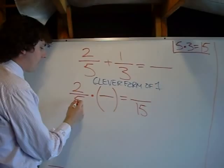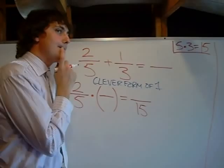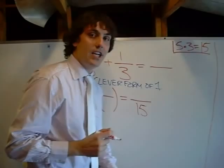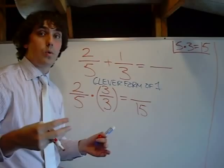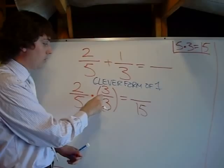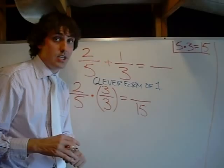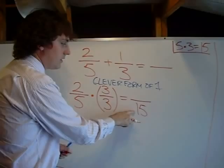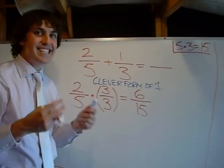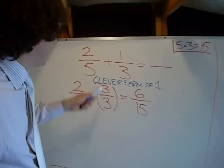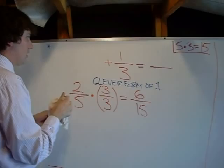So we can say 5 times some number equals 15. Now what could that number be? That's why we did this over here in this box. 5 times 3 equals 15. So if I put 3 on the bottom, I can also put 3 on the top, because 3 divided by 3 is just 1. So 2 fifths times 3 over 3 is the same thing as saying 2 fifths times 1. I'm not changing the fraction any. That's why we made this number right here. Now 5 times 3 is 15. 2 times 3, because we're multiplying straight across. 2 times 3 is 6. So 2 fifths is the same thing as saying 6 fifteenths. So I can come over here and replace my 2 fifths with 6 over 15.